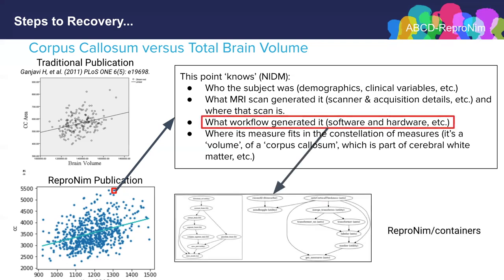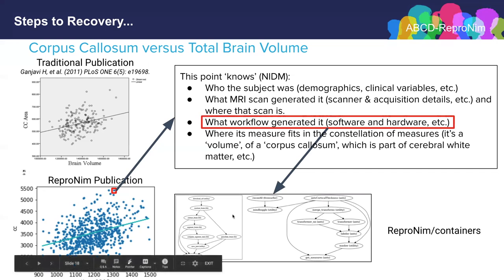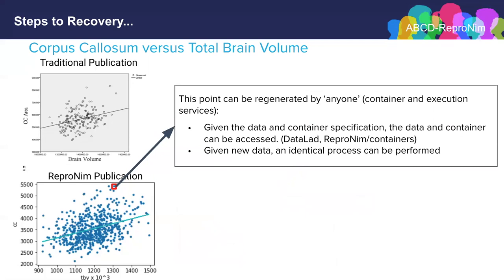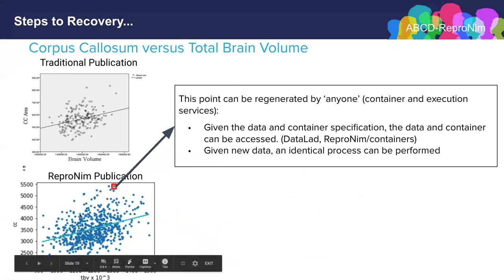The workflow that generated that particular point is a containerized workflow — that container lives at a place that is indexed and findable by others, so that particular set of analysis routines could be downloaded and run by other individuals. The workflow is connected to that point and is accessible to others. That means that this particular point could be regenerated by anyone who has access to that container, the execution services needed, and that particular dataset that was used. This is good from the re-executability point of view — anyone should be able to re-execute that point and all the other points as well.